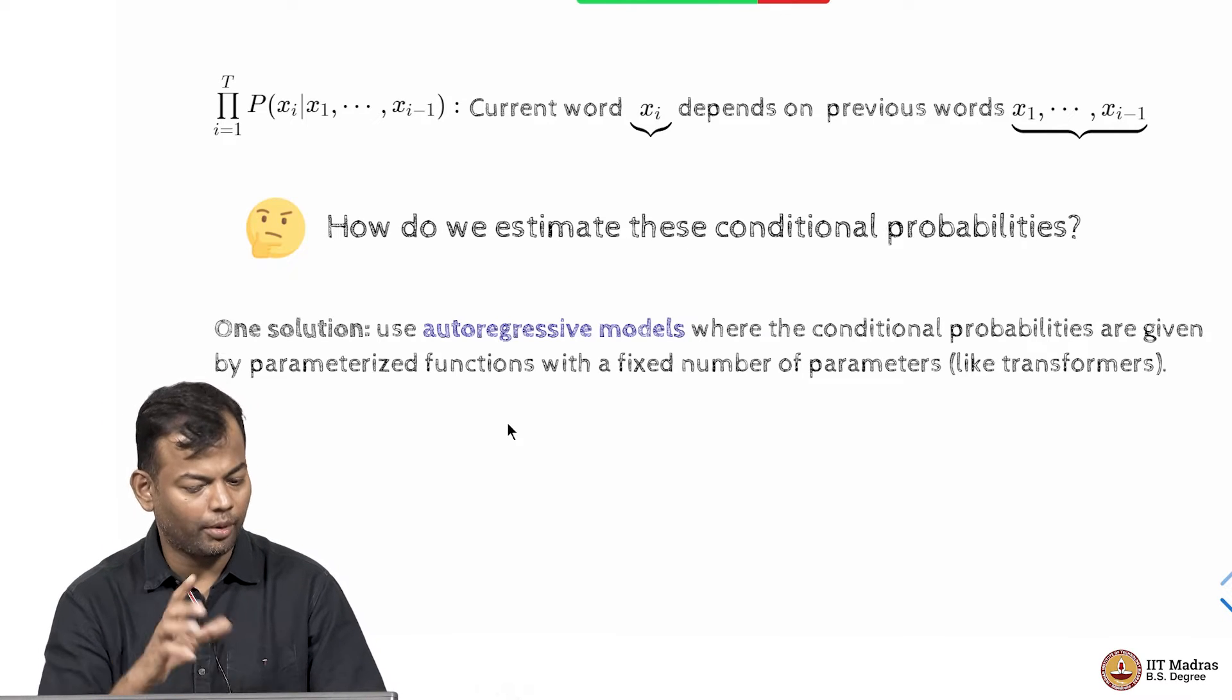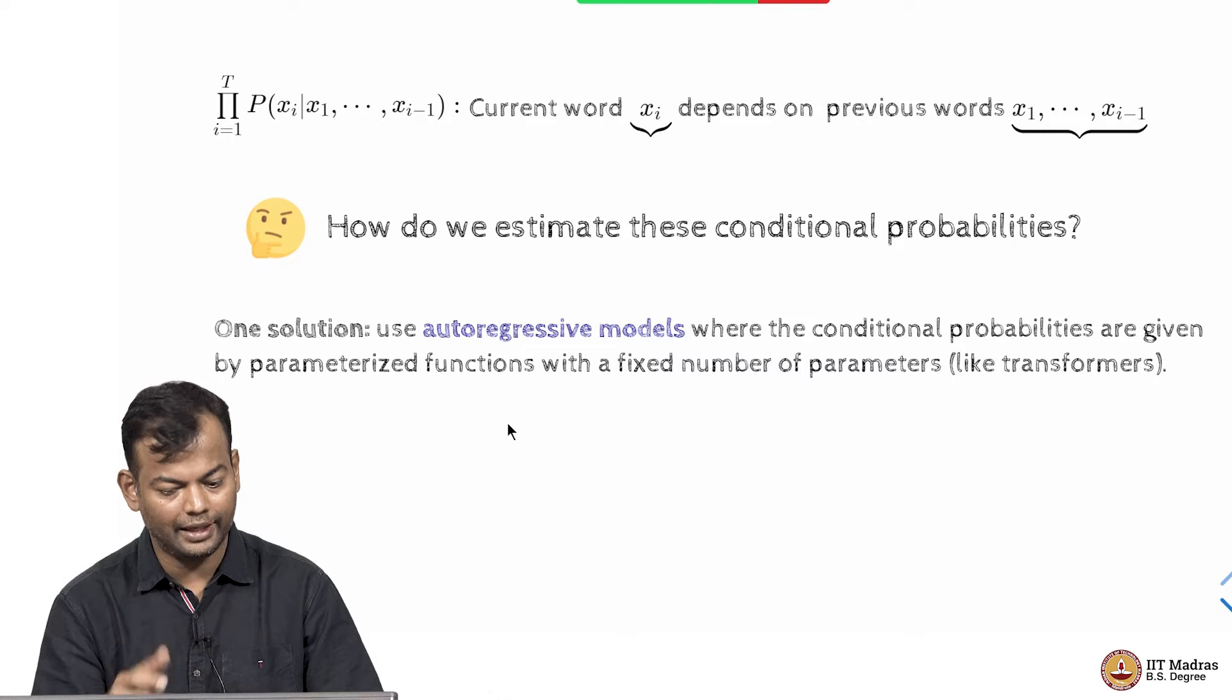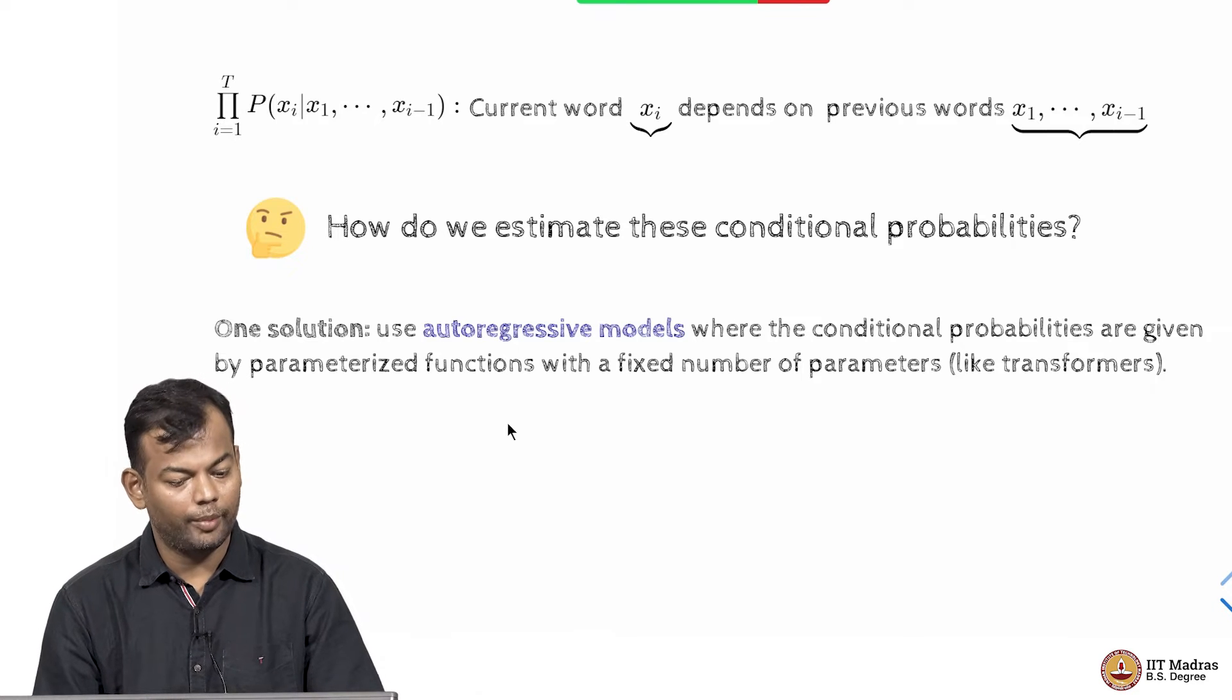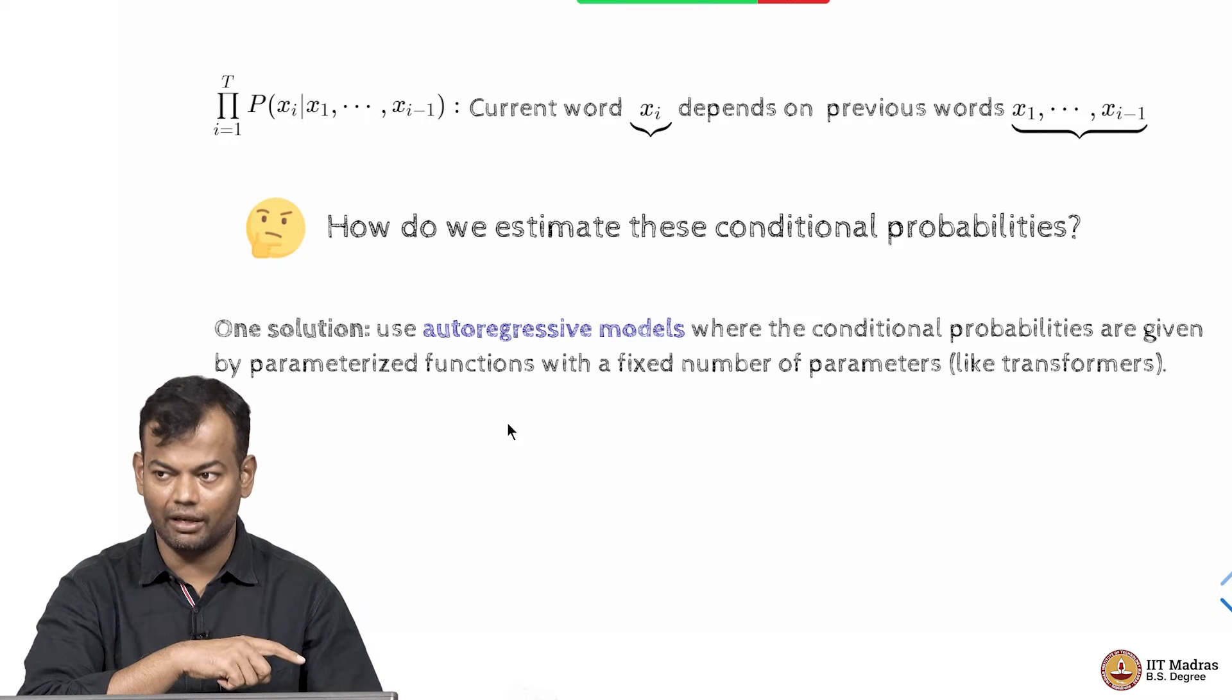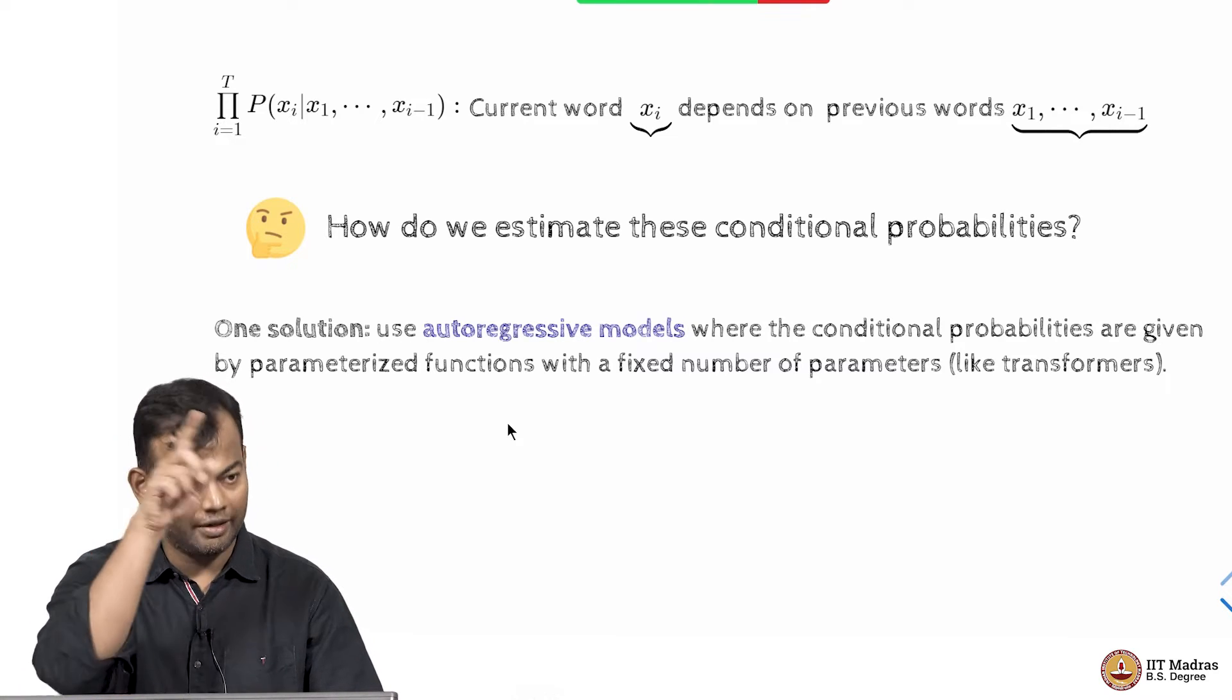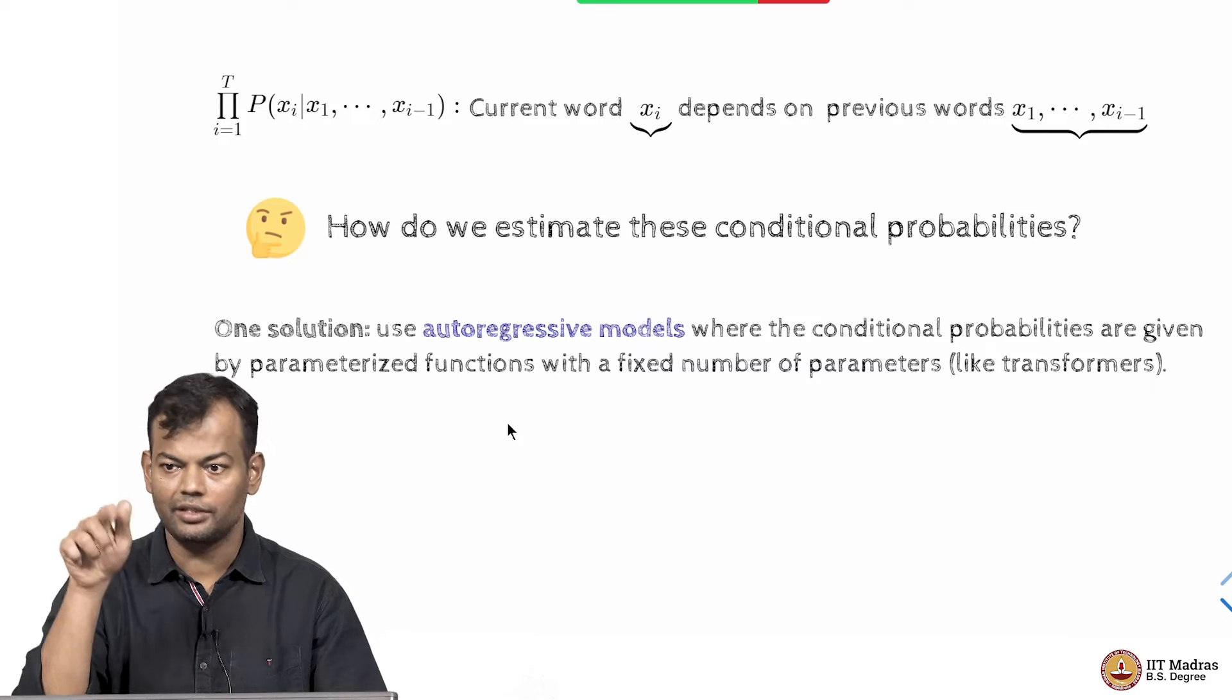I will talk a bit more about autoregressive, what does that word mean later on? Where the conditional probabilities are parameterized functions with a fixed number of parameters. A very complex sentence. Simply put, it is the diagram which I showed, where you pass in an input, you have a function which is parameterized.